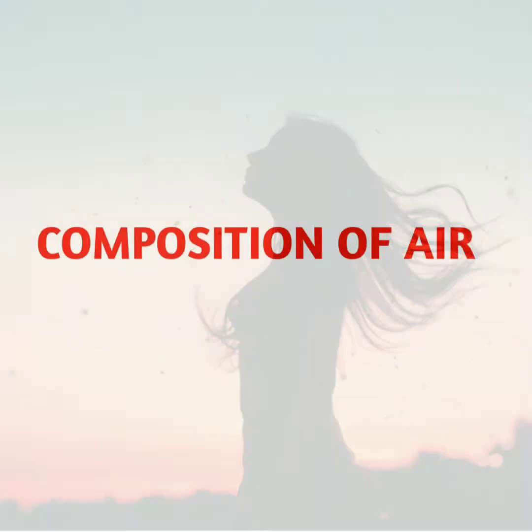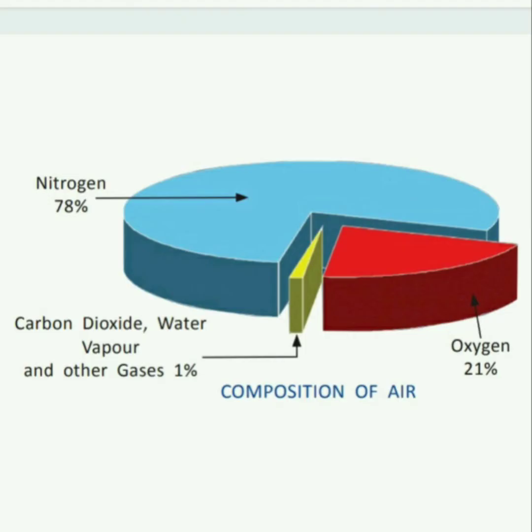As you know, air is a mixture of gases. It contains nitrogen, oxygen, and other gases like carbon dioxide, helium, hydrogen, and ozone. It also contains water vapors, dust, and smoke. So let's see the composition of air — what it contains, which gases are there.